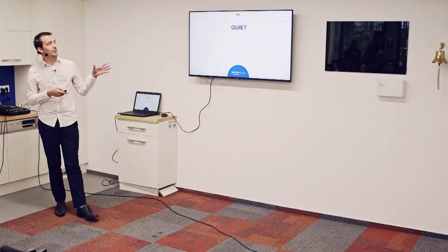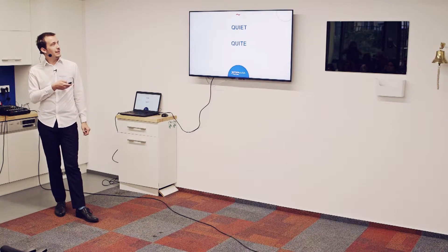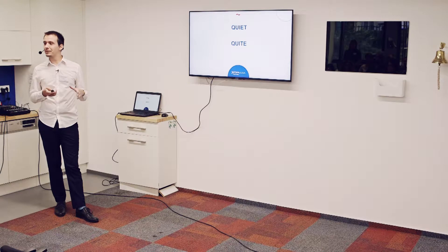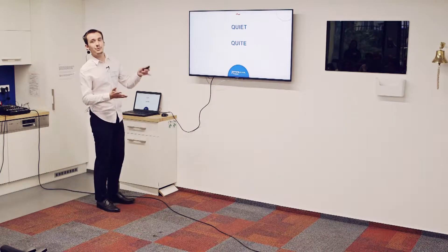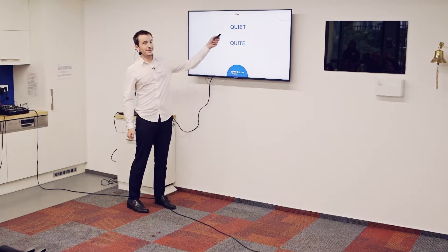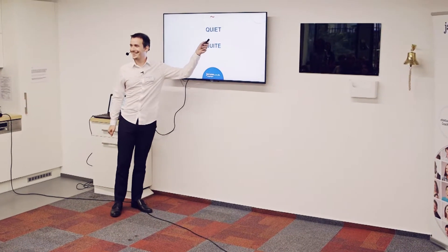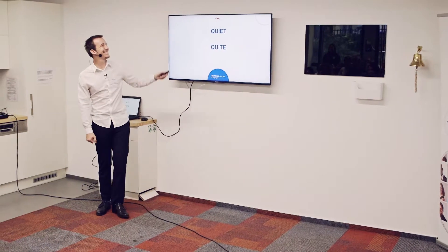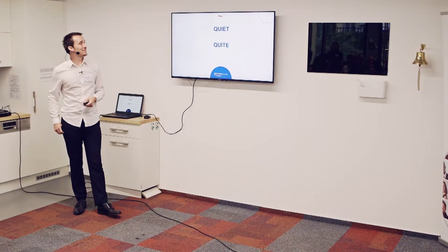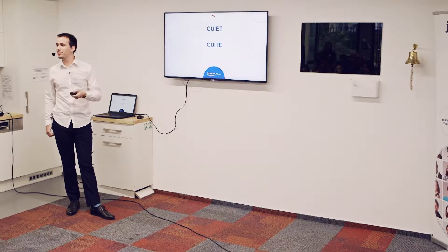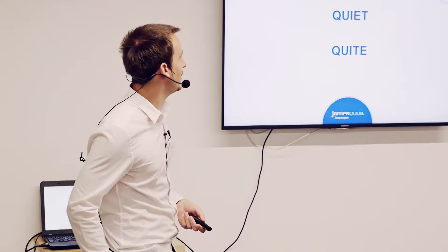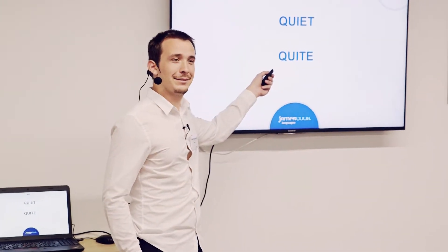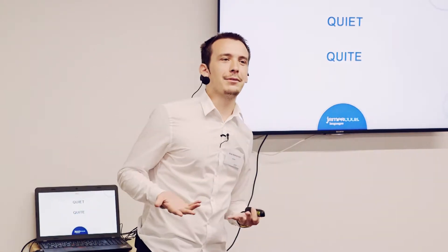He walked up to the blackboard and wrote the two words on the blackboard. He was like, 'Okay, so these are two different words. The first one, quiet, is a modifier — an adverb — and it means slightly, not too much. And the second one, quite, is the opposite of noisy.' And of course, it was the other way around.